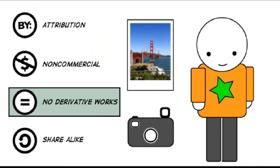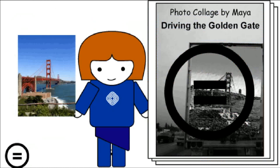The third option is to declare no derivative works. This lets others copy and redistribute my photo, but only if they do so without altering or transforming it — I might choose this if I want my photos distributed only in their whole original state. If Maya wants to crop my photo and include it in a collage, she has to ask my permission first, though she could copy and distribute the photo in its original form.